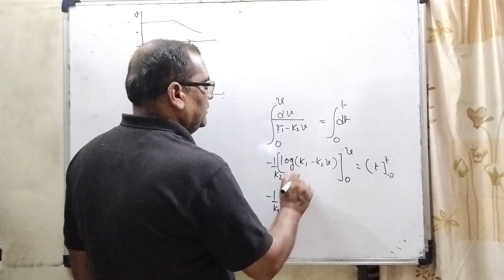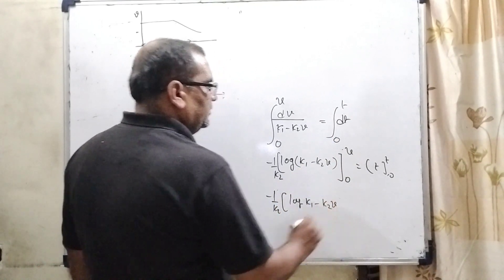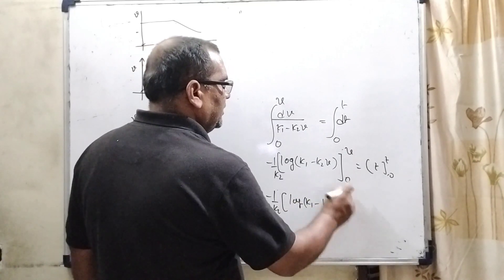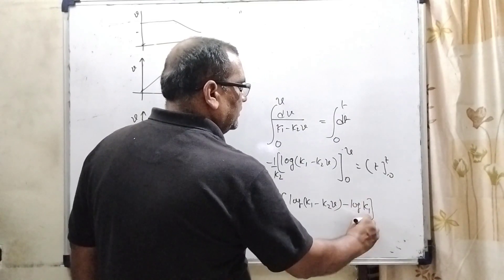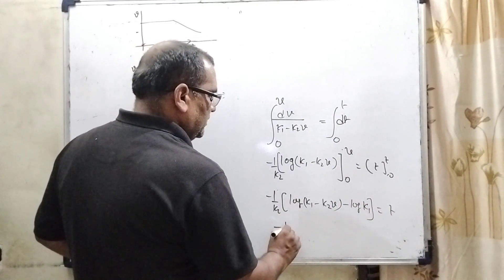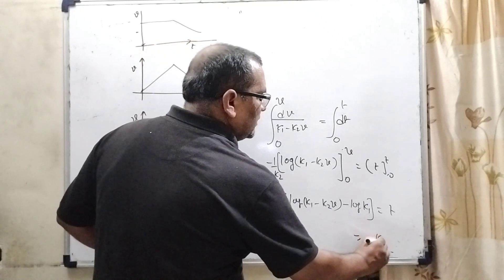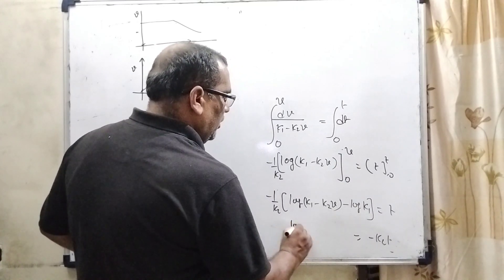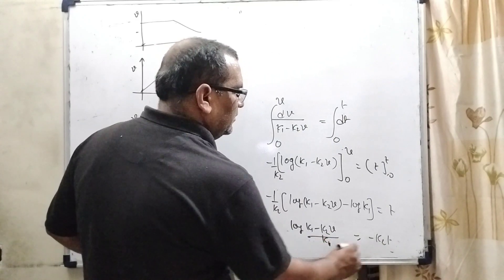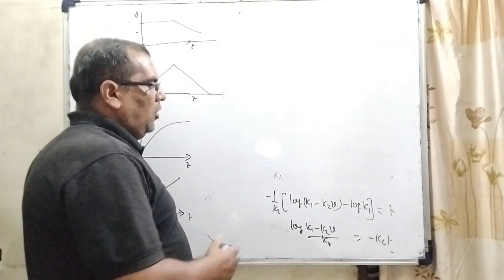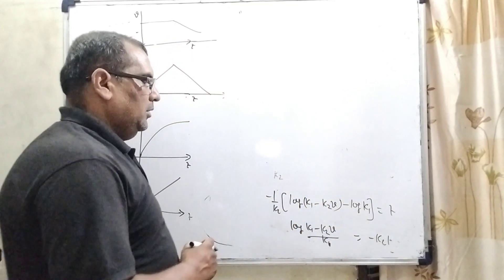Now, substitute this limit then log K1 minus K2V upper limit and lower limit that is 0. So, it can be written as log K1. So, here minus K2 is transposing to the right side become minus K2T here log K1 minus K2V upon K1. Log property log M minus log N can be written as log M upon N. So, here base e.